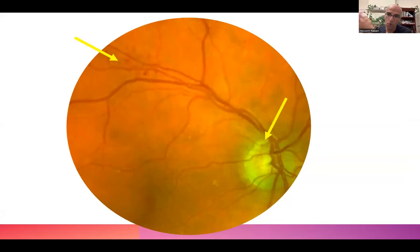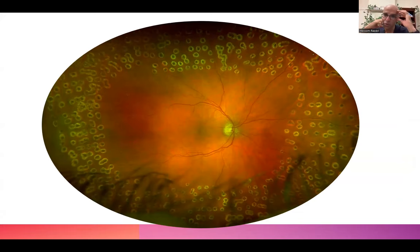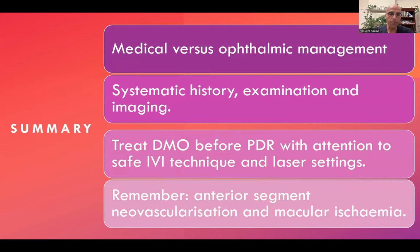Full PRP was performed in the right eye. PRP can be brought in further if PDR persists — initially not constricting visual field too much, but if PDR persists it can be brought within about one disc diameter of the disc nasally. In the left eye, the PRP itself caused a vitreous hemorrhage — patients must be counseled about this risk beforehand. This is usually a small vitreous hemorrhage that resolves without vitrectomy.